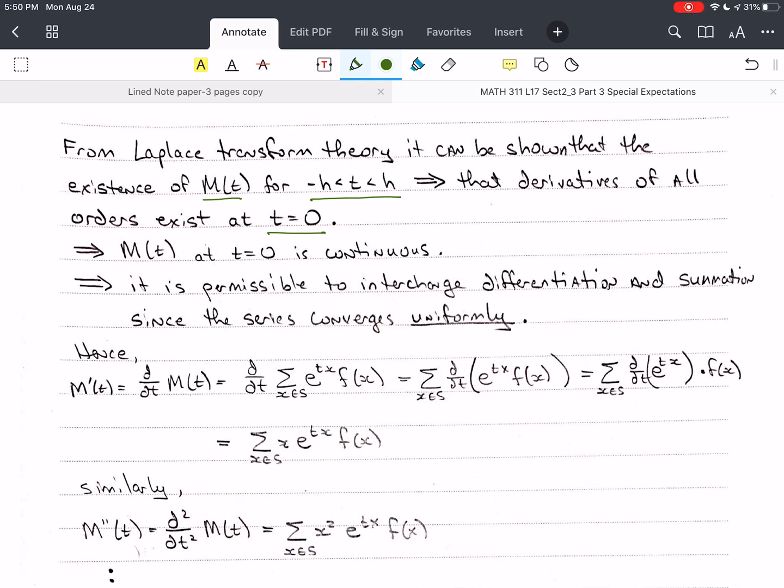This implies that m of t at t equals zero is continuous. That means or implies that it is permissible to interchange differentiation and summation since the series converges uniformly.